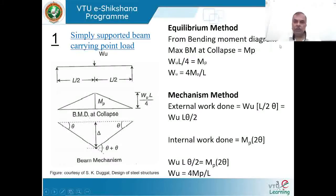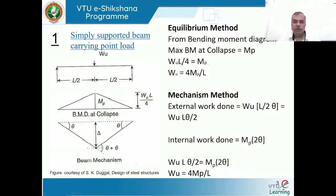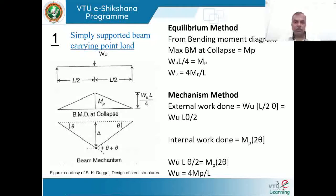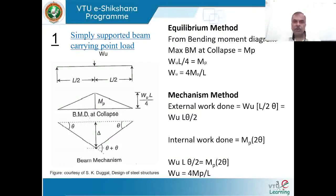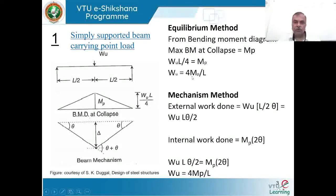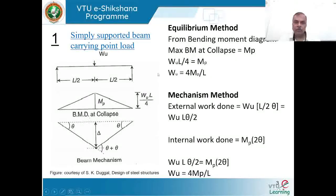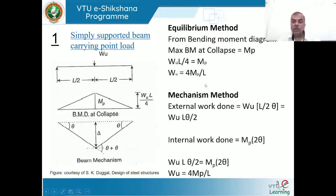From the bending moment diagram, the ultimate moment is WL/4, which equals mp. Satisfying the equilibrium equation gives W = 4mp/L, or equivalently mp = WL/4. Using the kinematic approach, we obtain the same answer W = 4mp/L.